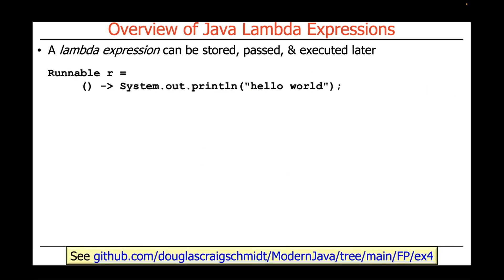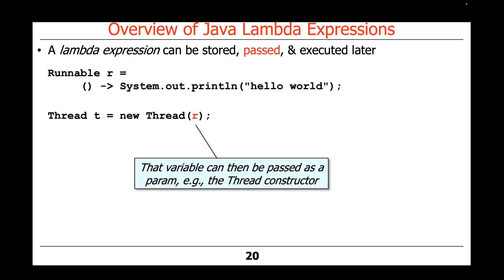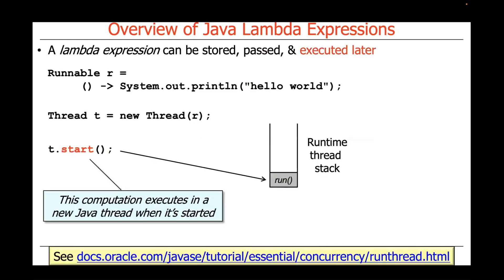Lambda Expressions can be stored, passed, and executed later. Here we define a Runnable r, storing the lambda expression that will print hello world into a variable. We then pass that variable — that Runnable — as a parameter to the thread constructor. When we start the thread, that will execute the lambda expression later: after the runtime thread stack has been created and the thread has started to run, at that point the system println will print out hello world. That's a good example of storing, passing, and executing lambda expressions later in some other context.